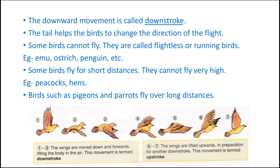In pictures 1, 2, and 3, you can see the wings are moved down and forward, lifting the body in the air — this movement is called downstroke. In pictures 4, 5, 6, and 7, you can see the wings are lifted upwards in preparation for another downstroke — this movement is called upstroke.